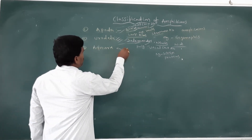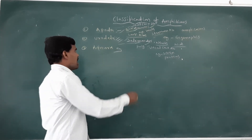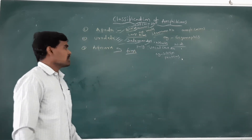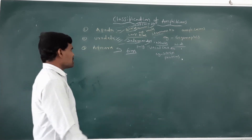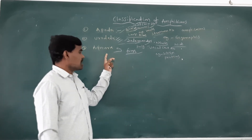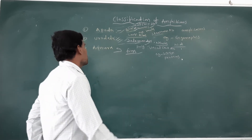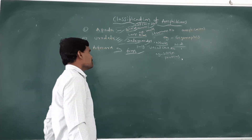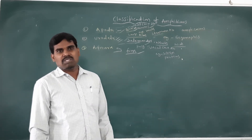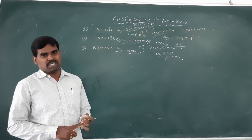Next, Anura — the third class. Anura includes all types of frogs and toads. This class of Amphibians is aquatic and terrestrial. Anura includes all types of frogs and toads. The tail is absent. The hind limb is present. Eyes are present covered by a nictitating membrane.